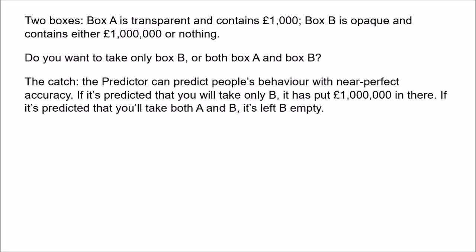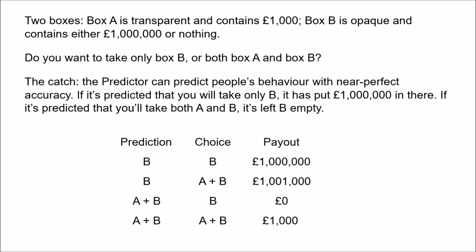If it has predicted that you will take only Box B, then it's put £1,000,000 in Box B. If it's predicted that you will take both boxes, then it's put nothing in Box B. Here's the table showing the payout based on the predicted choice and your actual choice. So the question in Newcomb's problem is: what should you do? Do you take just Box B or do you take both boxes?